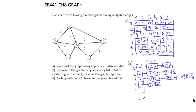For node 5, there is no connection going out from this node, so we will have a nil value as the header. For the last node 6, there is a connection from 6 to node 3 with weight 1, and that's all.